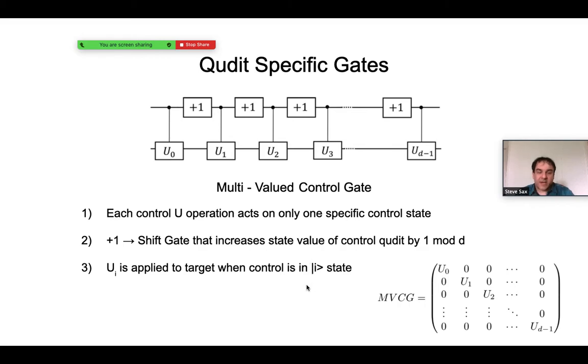The multi-valued control gate really harnesses the power of a Qudit environment. If you were to generalize a regular control unitary gate, you would have a control Qudit such that if it were in a particular D state, it would apply a particular unitary operation to the target Qudit. But if it were in any of the other D minus one states, it wouldn't do anything. Here, a different unitary operation is applied to the target Qudit depending upon which of the D states the control Qudit is in. So it really makes use of all the states, and you can see this by the matrix representation here.